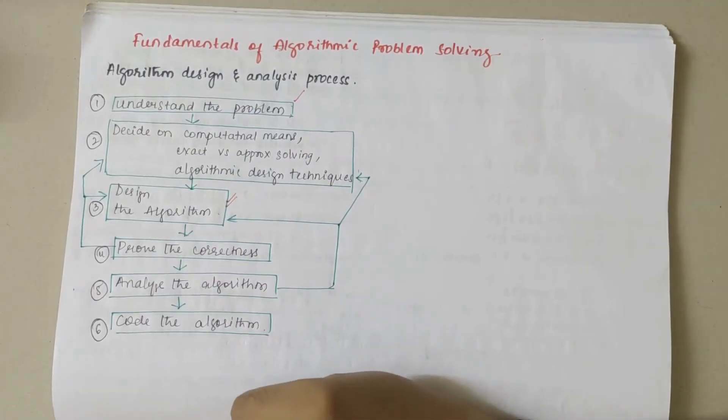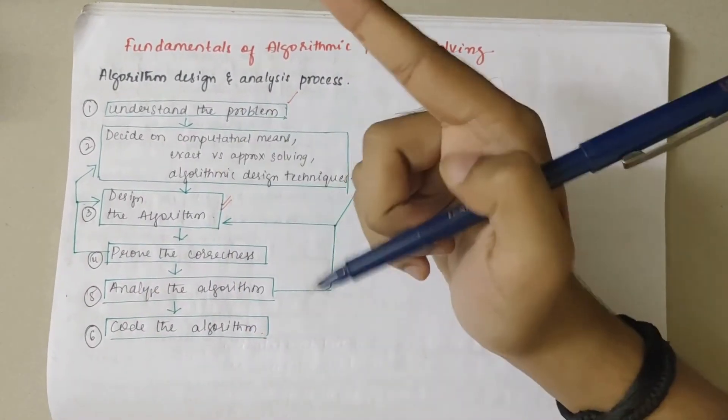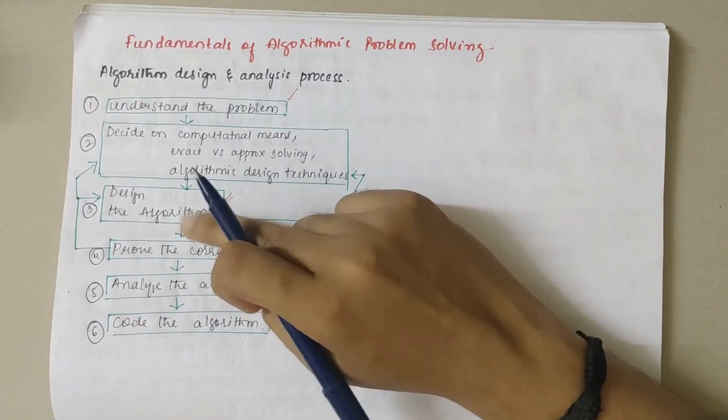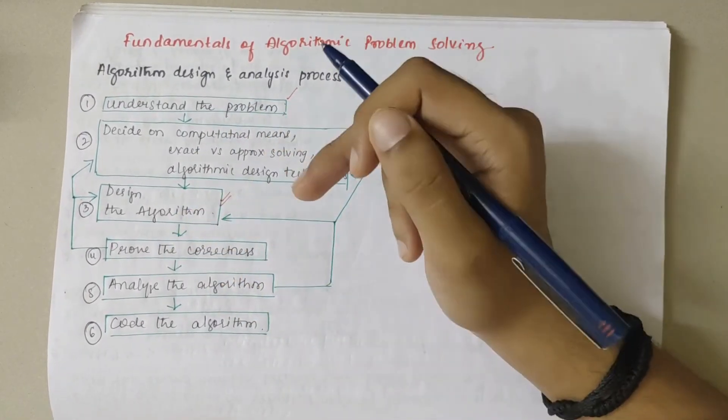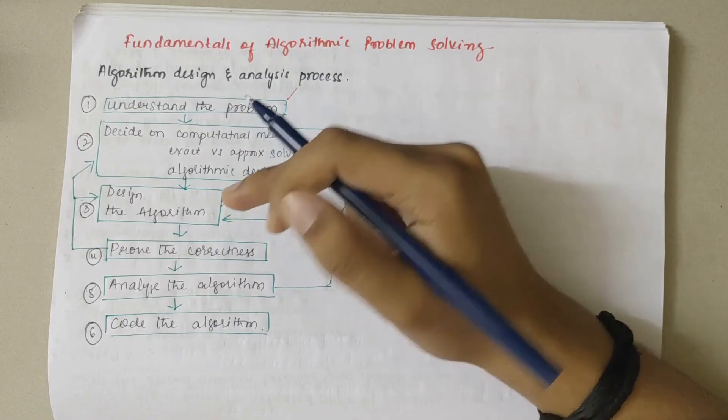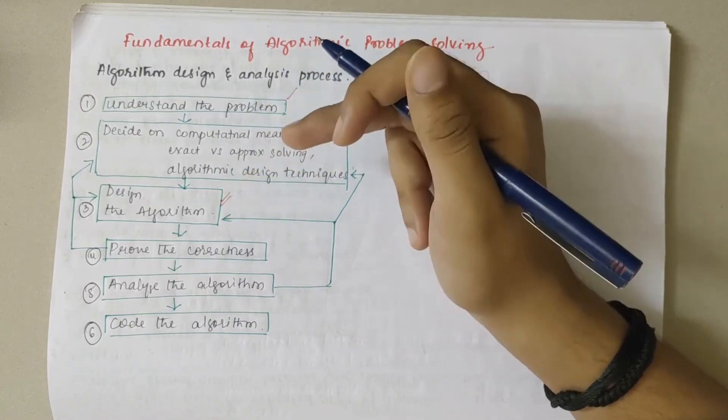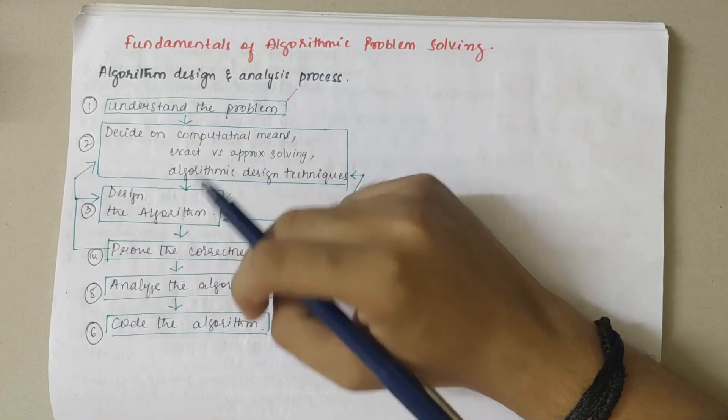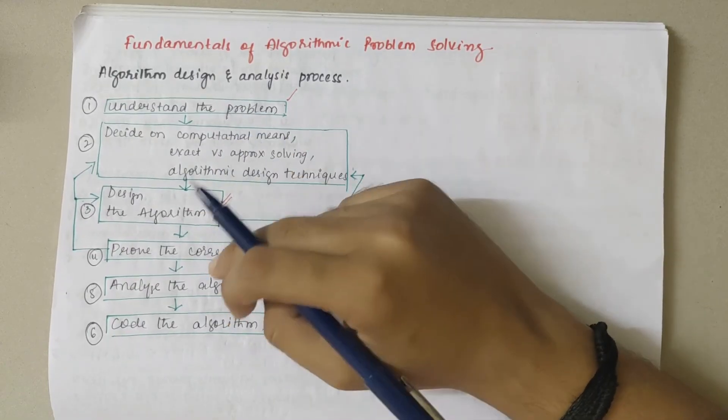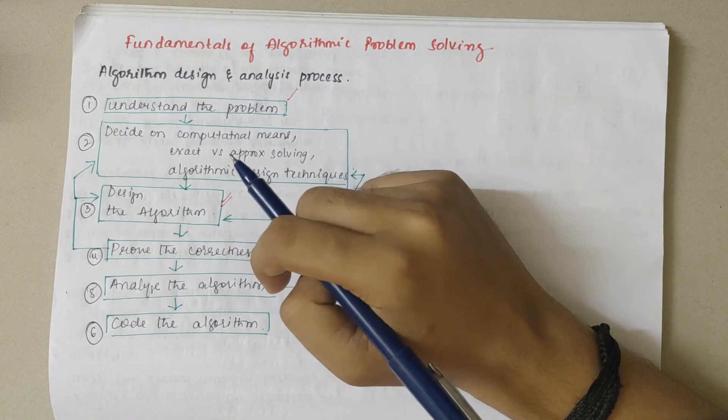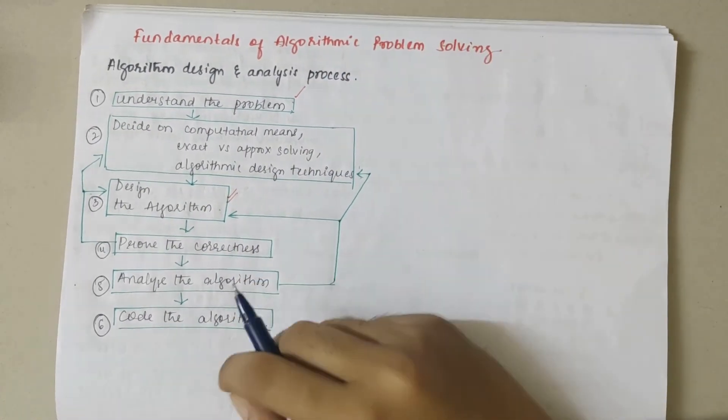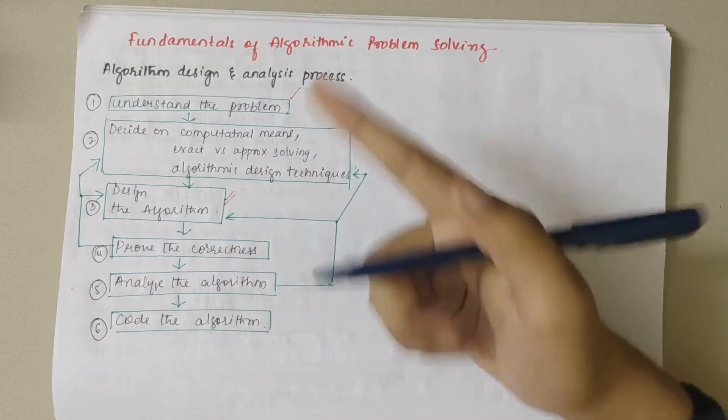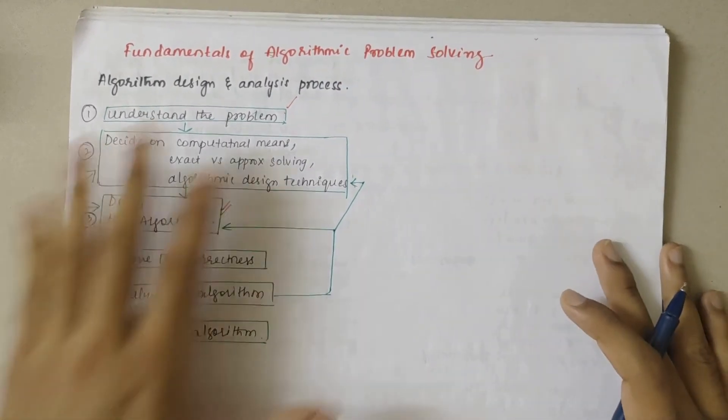Coming to the next part, we have designing the algorithm. Algorithm plus data structures gives programs. Now that we have decided on the means, we'll further formulate the algorithm. Once the algorithm is formed, we have to check their correctness - we have time complexity, space complexity and all to check the correctness. Once it is corrected, we need to analyze the algorithm: space, time efficiency, simplicity, all those factors. Then finally we have coding the algorithm. Once the algorithm is ready, it can be implemented as computer programs.